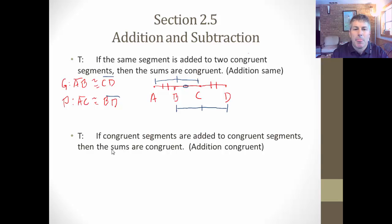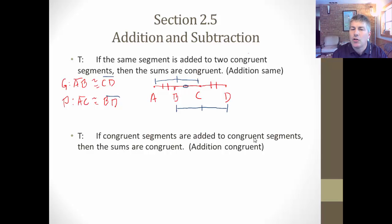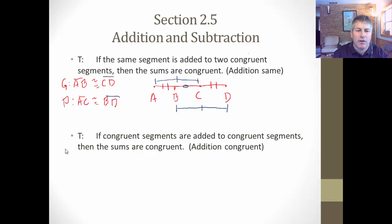We have another theorem that says if congruent segments are added to congruent segments, then their sums are congruent. So now we're not going to add the same set of points — we're going to add congruent sets of points. So our givens and diagrams are going to look a little bit different.